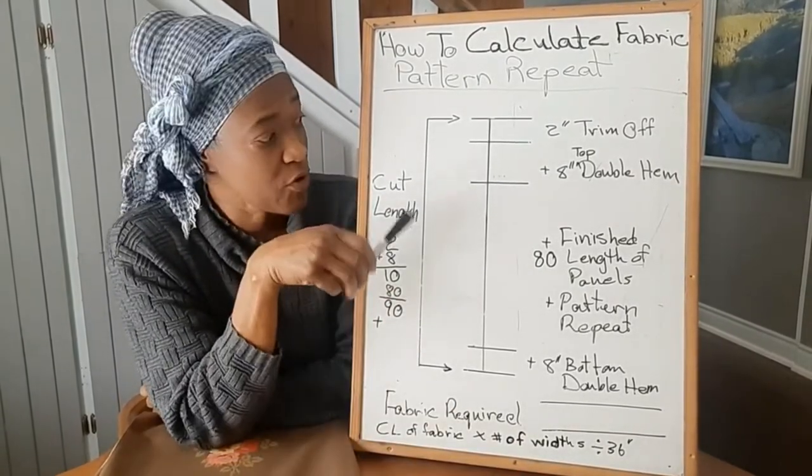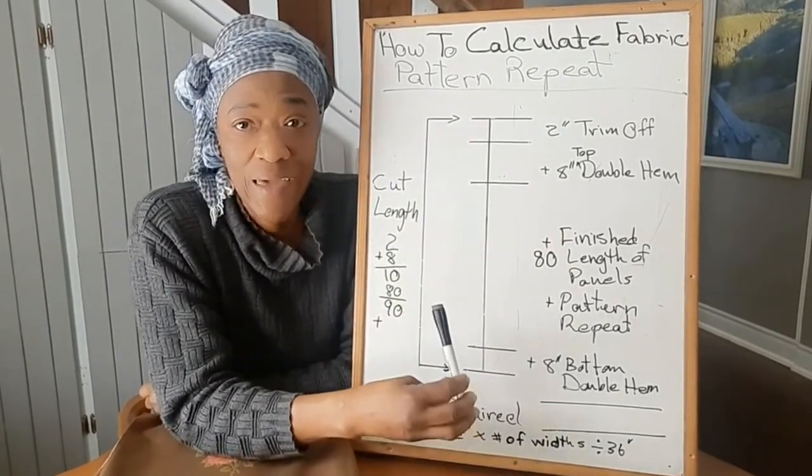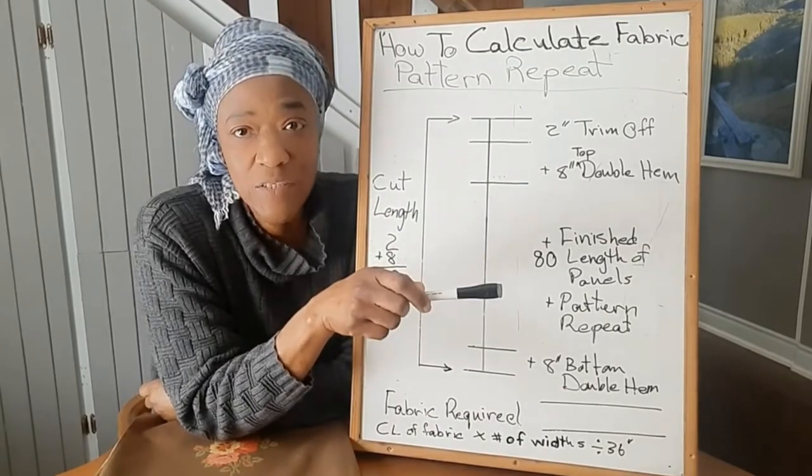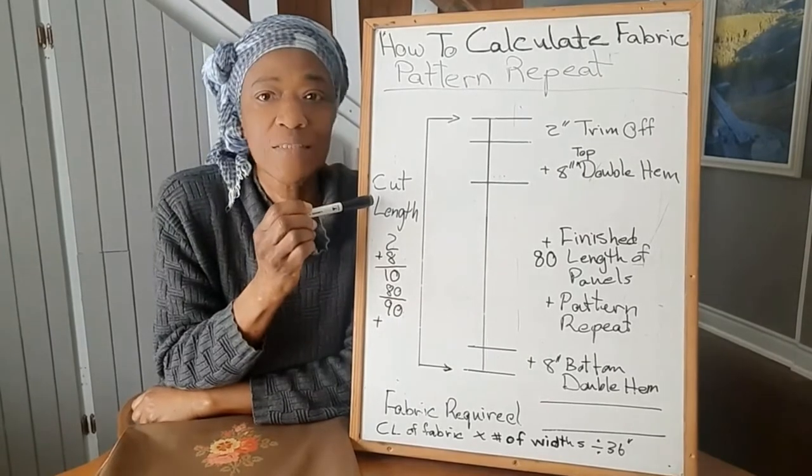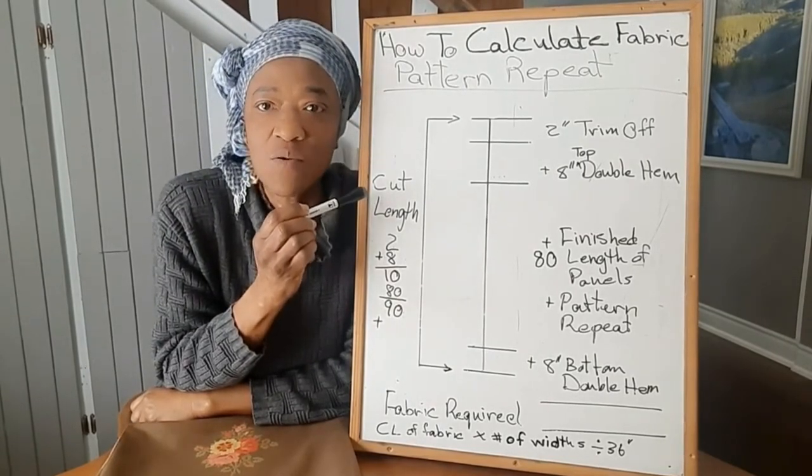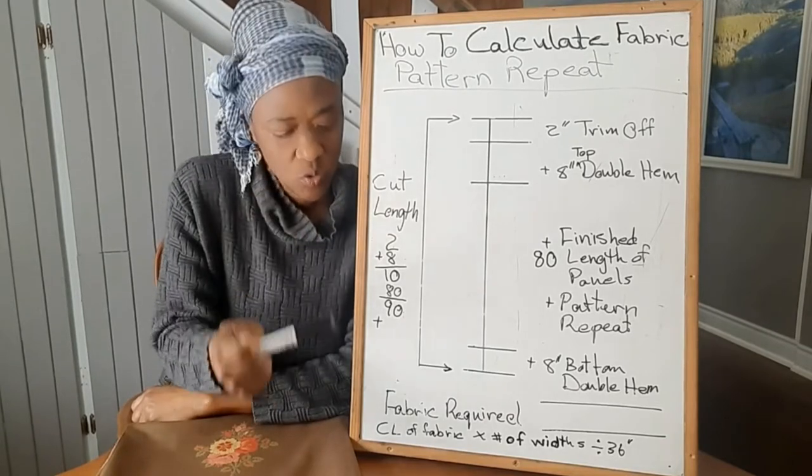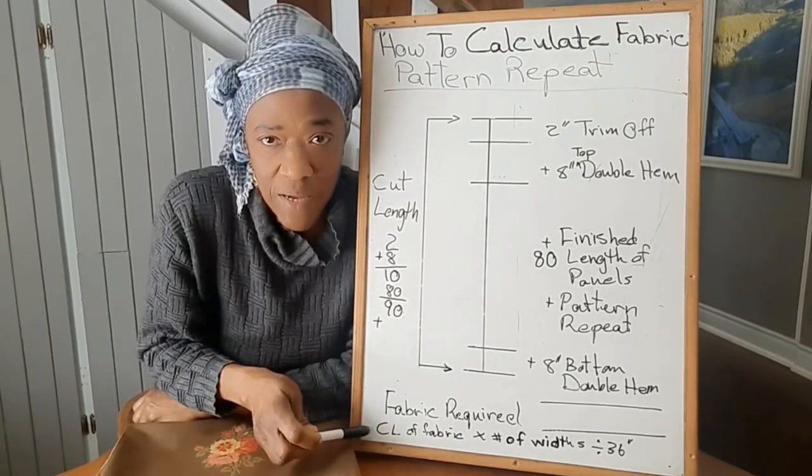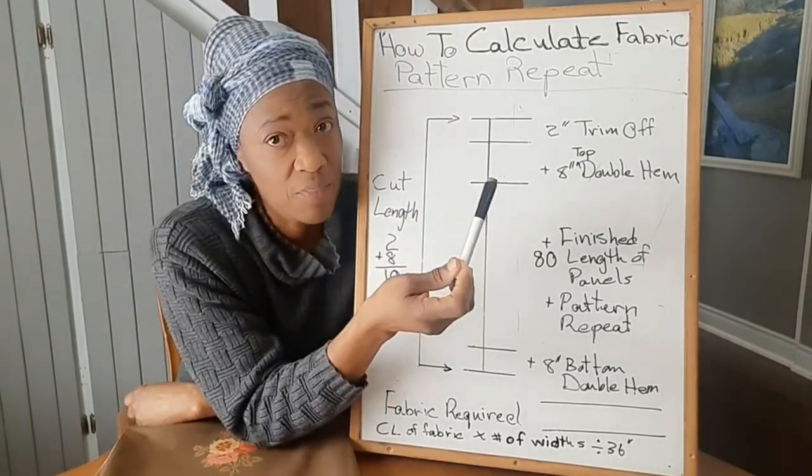Now on the board I do have a little diagram, and this diagram takes into account all the numbers that we need to add in order to be able to get our correct cut length, because our cut length is what we really need in order to do our fabric calculation requirements. So let's go through the numbers that are on the board.